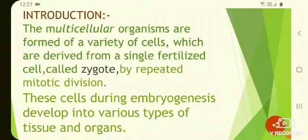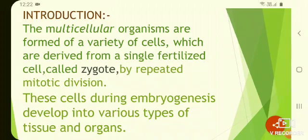As you all know, multicellular organisms are formed of a variety of cells and they are derived from a single fertilized cell called zygote by rapid mitotic divisions. These cells during embryogenesis develop into various types of tissues and organs.